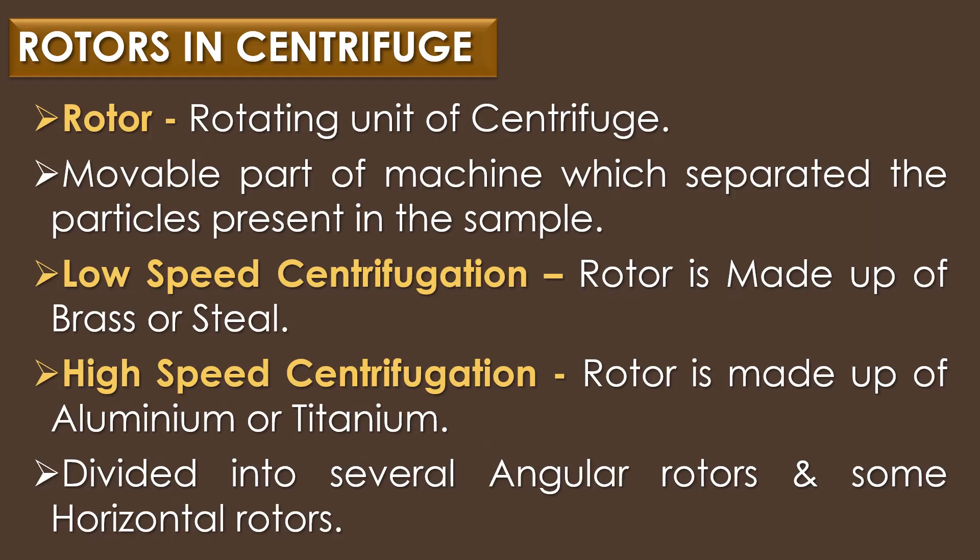Rotors. The tubes or bottles containing the liquids to be centrifuged are held in place by the rotor. The rotor is the rotating unit of a centrifuge and the movable part of the machine which separates the particles present in the sample. For low speed centrifugation, the rotor is made up of brass or steel, and for high speed centrifugation, the rotor is made up of aluminium or titanium.